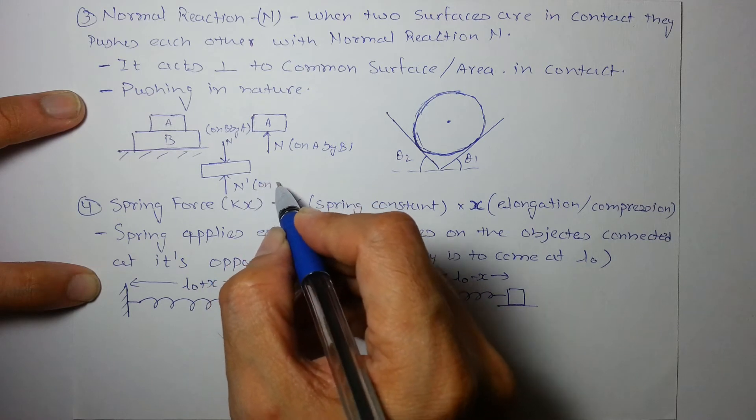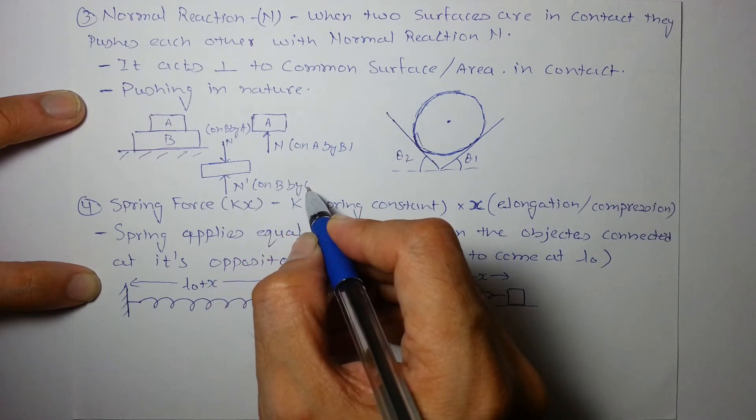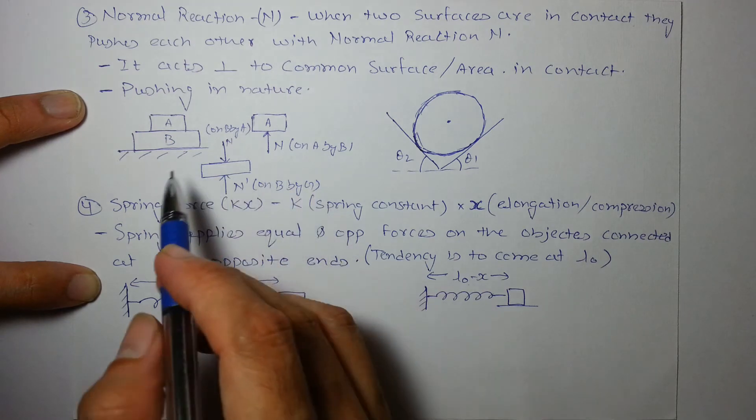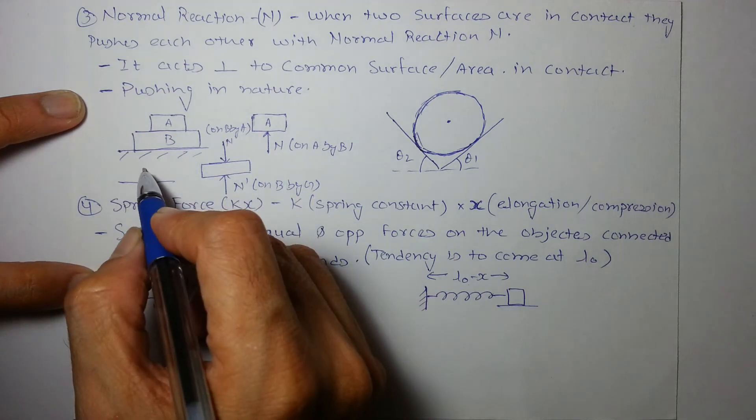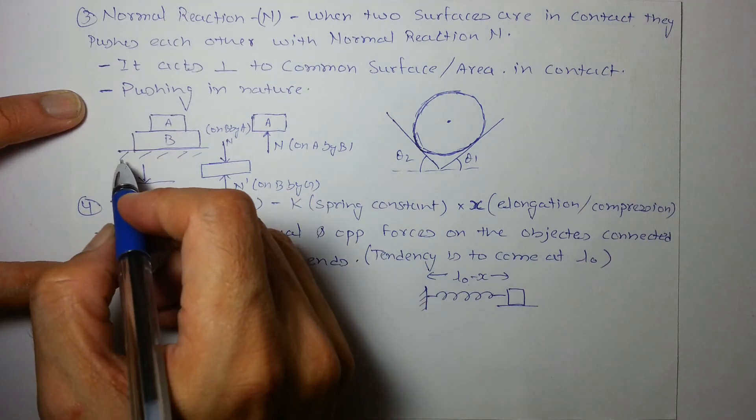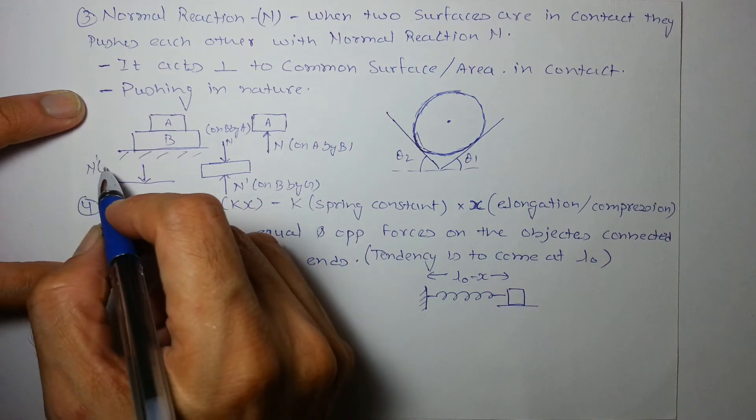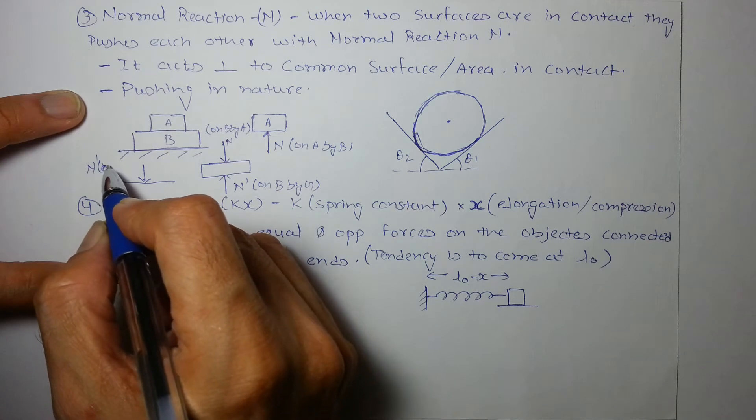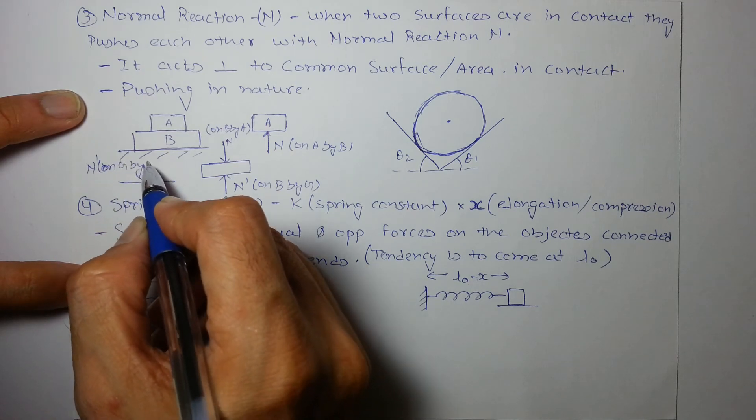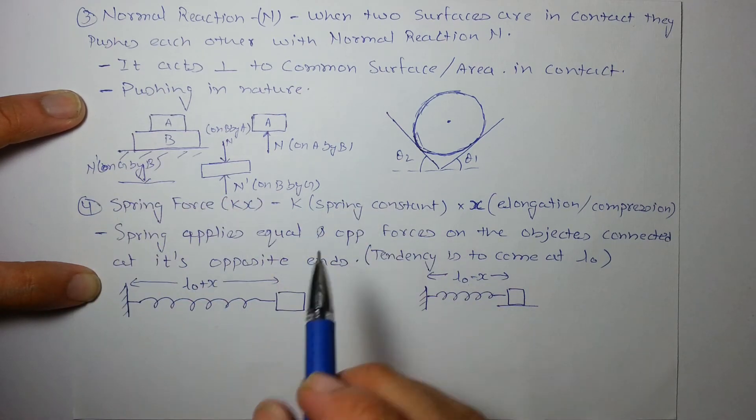This is N' on B from ground. And ground will also experience force from B because B is in contact with the ground. So normal N' on ground by B. These are the normal reaction forces on A, B, and ground.